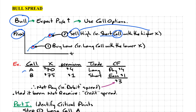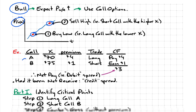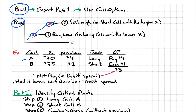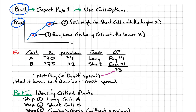Through the use of these two call options, it would enable him to buy at the lower price and sell at the higher price. Now let's look at an example with actual numeric values. We have two call options: one with a strike of 70, the other with a strike of 75. And of course, the lower the strike price, the higher the premium.